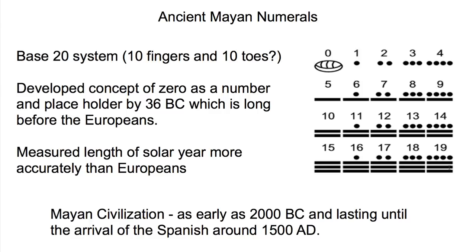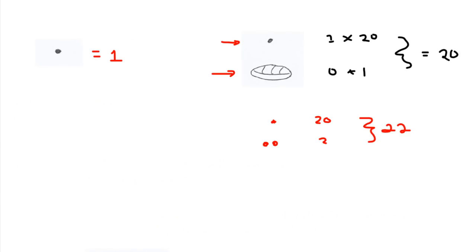Once you hit three bars and four dots, you've reached nineteen and that's where things are going to change. The Mayans were writing in a vertical number system — they're stacking the number symbols vertically.